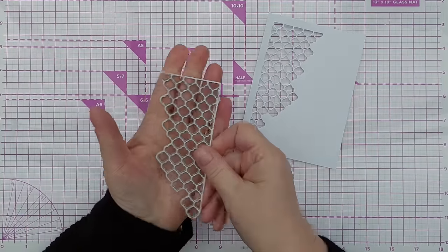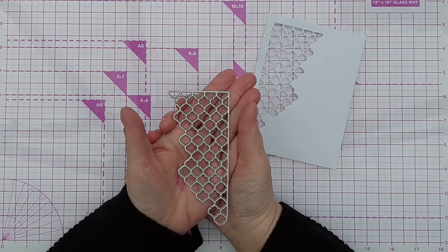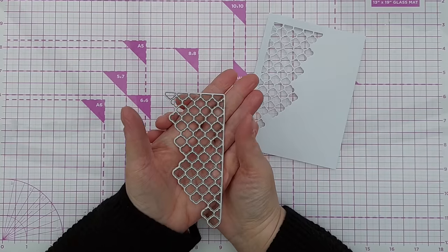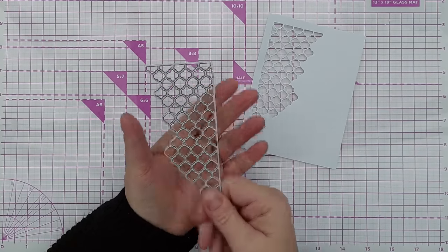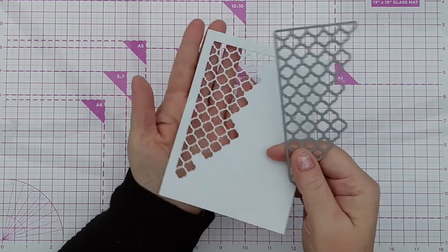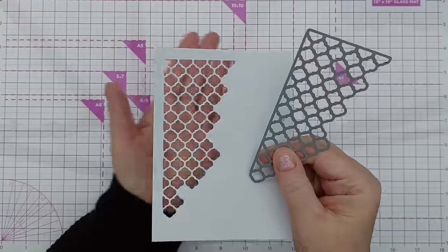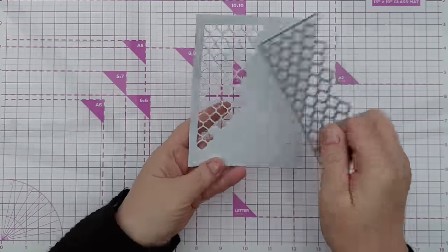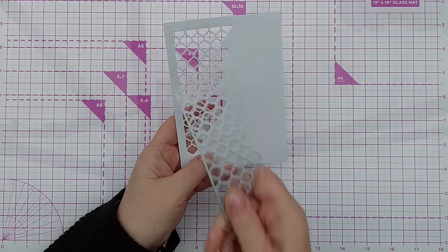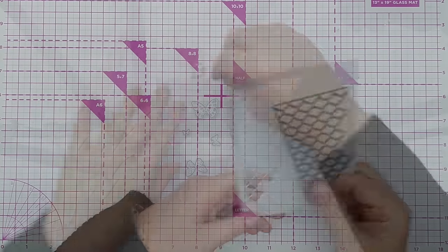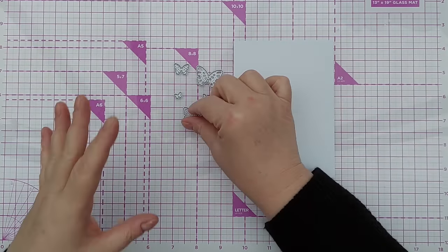So this is an aperture die, sometimes they're called peekaboo dies or cutting dies or window dies. If you want to look for them you can google anything you can think of that might describe this. They cut apertures, holes in your card panel, that you can then put over something pretty that will peek through the holes. But you don't necessarily need an aperture die to make apertures. You can use individual dies to create an aperture die look.